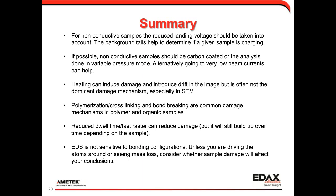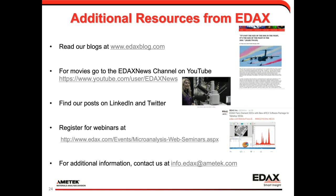Very high beam currents — in the 50+ nanoamp range — are where mass loss becomes significant within a reasonable time, which is mostly relevant for WDS/microprobe work. In TEMs, current density is much higher, so mass loss can occur quite rapidly. For more details on damage mechanisms in both SEM and TEM, I recommend the Egerton paper referenced at the bottom of the slide. That concludes the main presentation.